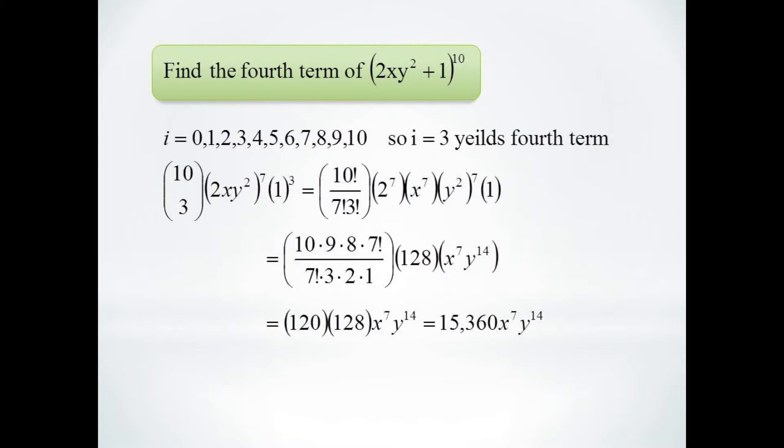10 choose 3 is 120. 2xy squared to the 7th is 128x to the 7th y to the 14th. And of course, 1 to the 3rd is just 1. So our fourth term will be 15,360x to the 7th y to the 14th.